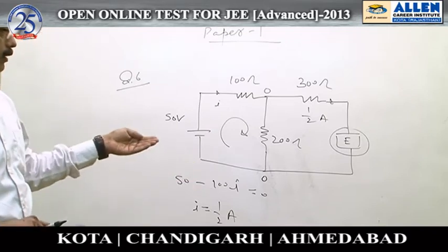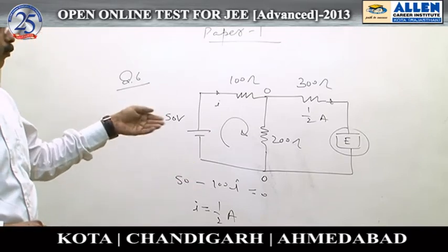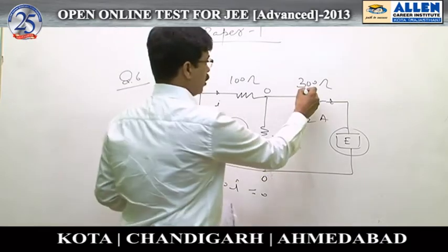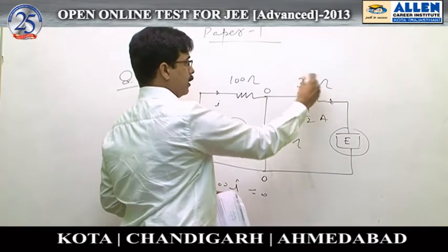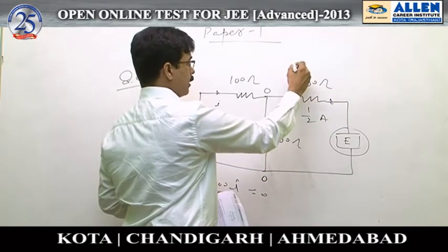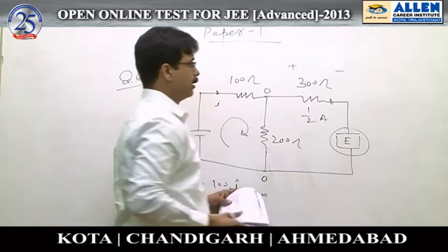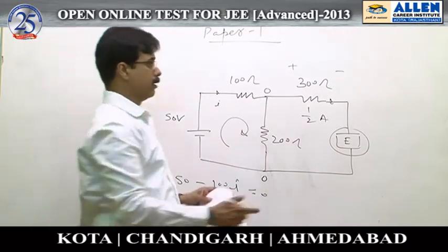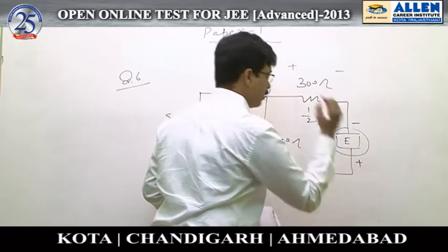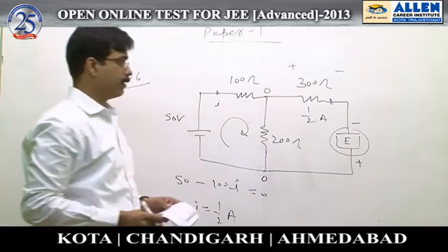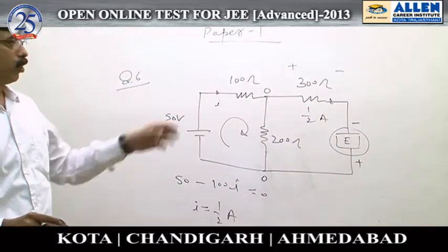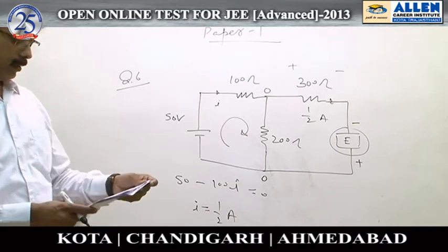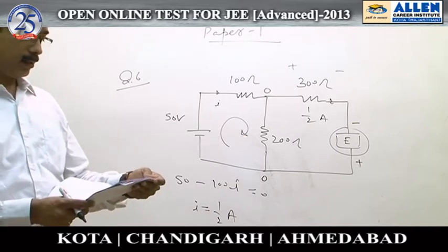Now the question arises: what will be the polarity? Checking the polarity of the 300 ohm resistor, it is plus-minus. So naturally the polarity of the cell should be reversed — negative — with a potential difference of 150 volts. That means your answer is A.